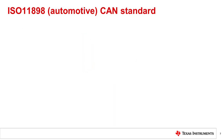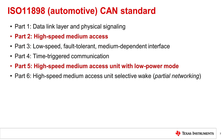Automotive CAN interfaces are dictated by the ISO 11898 standard, which includes six parts. Each part addresses some specific aspect of CAN, shown here. Part 2, for example, is referred to as ISO 11898-2 and covers the CAN physical layer for high-speed CAN. Part 5 adds low power mode requirements to the ones outlined in Part 2. Partial networking requirements are outlined in Part 6.